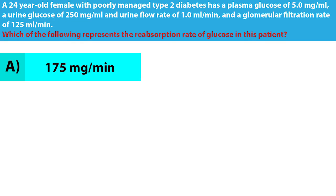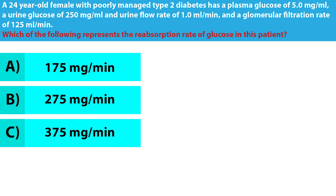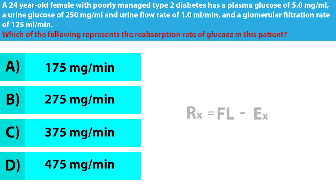Your options are 175 milligrams per minute, 275 milligrams per minute, 375 milligrams per minute, or 475 milligrams per minute. Pause the video to work out the problem.